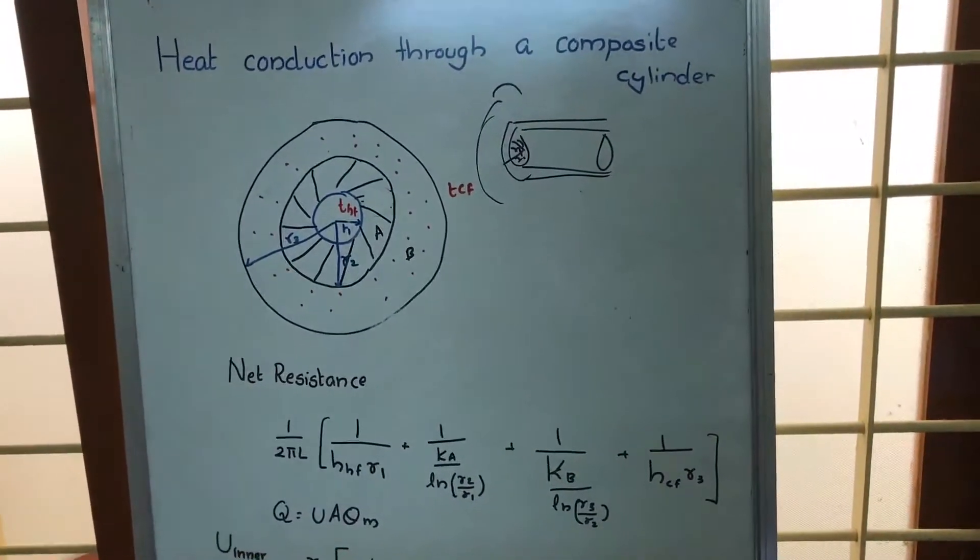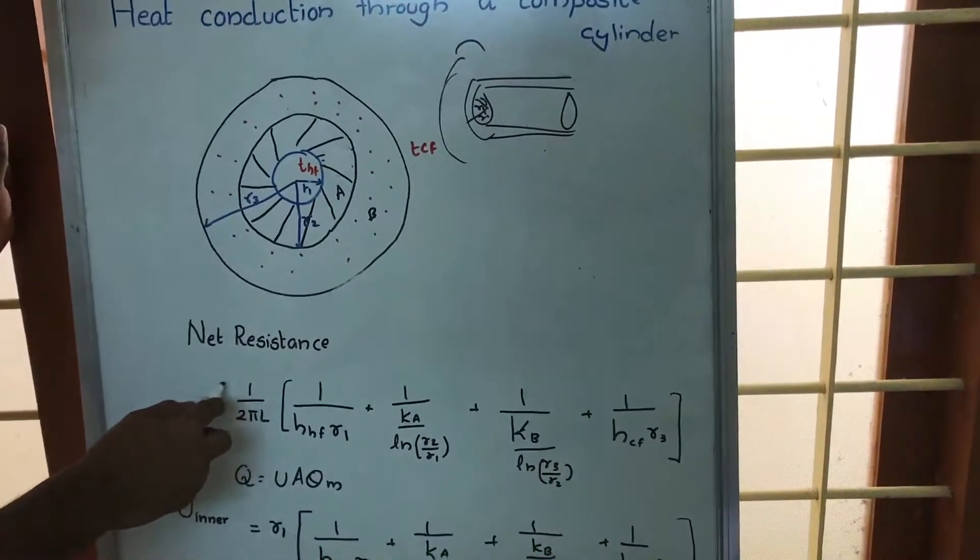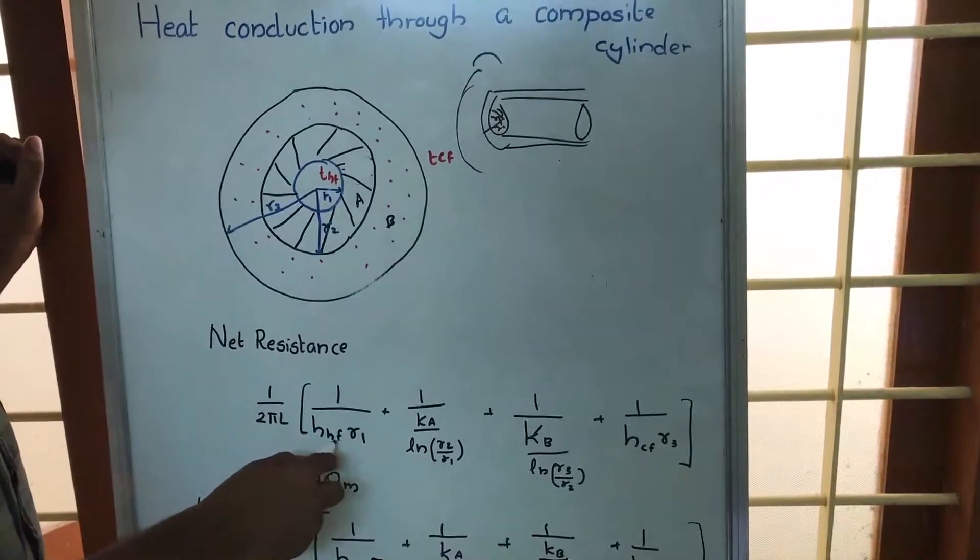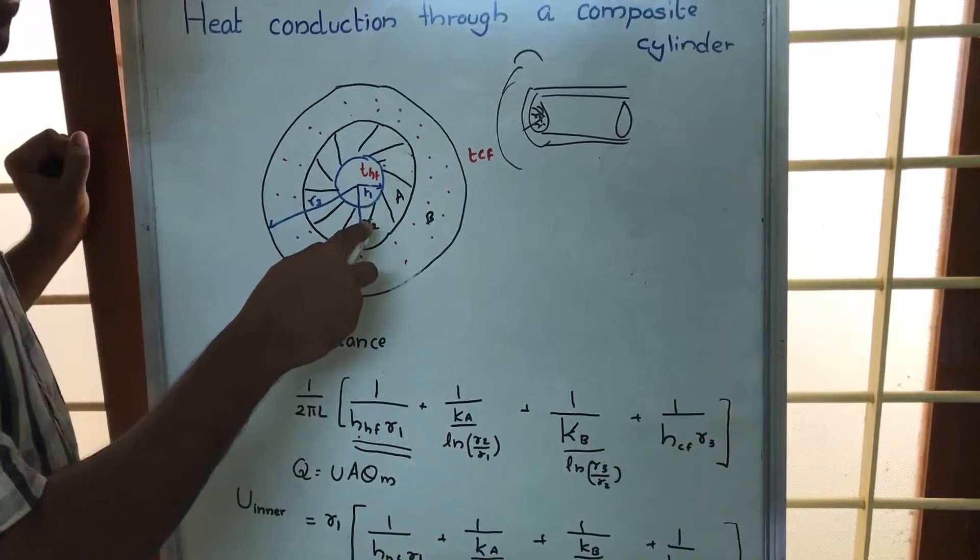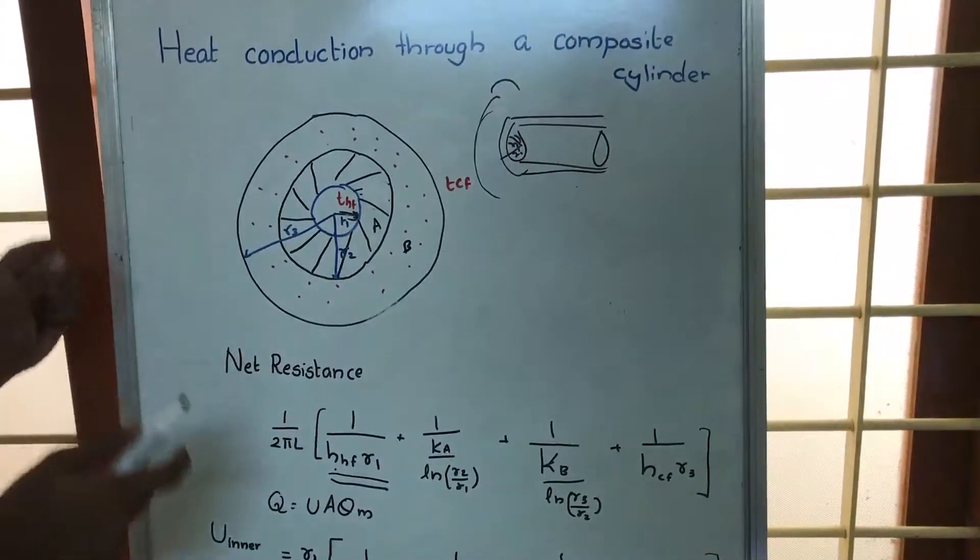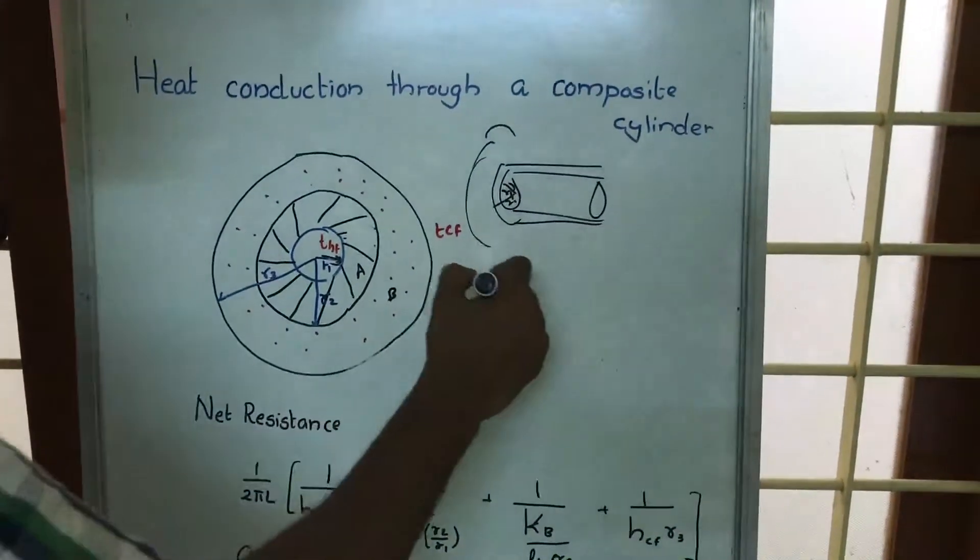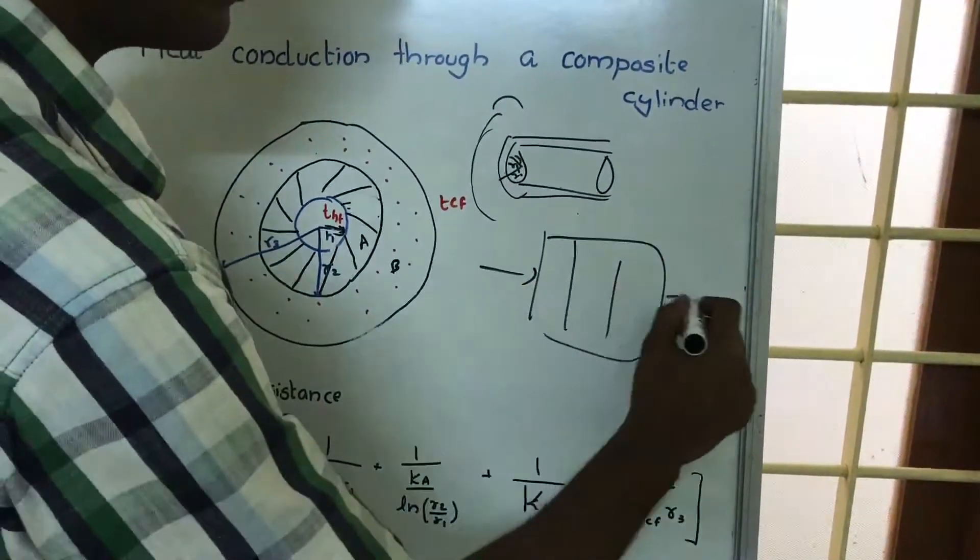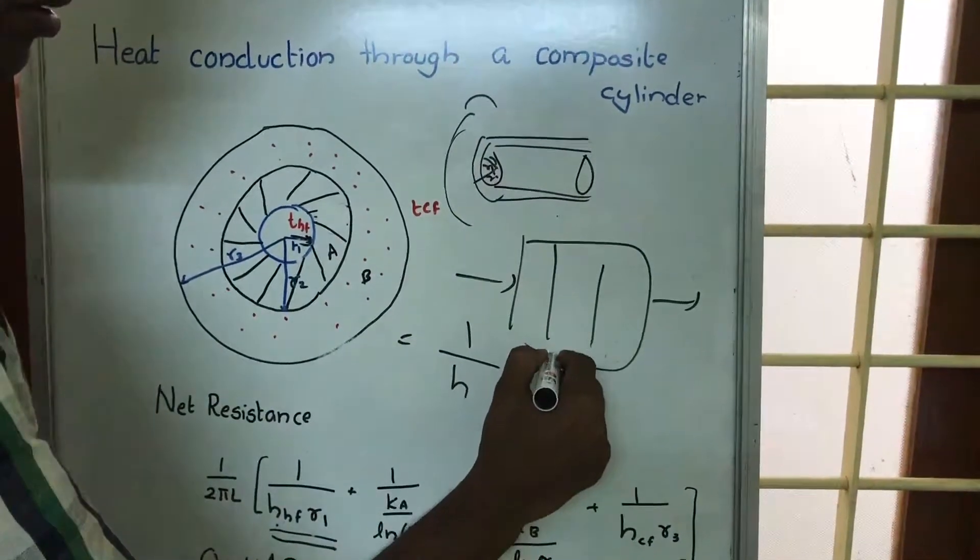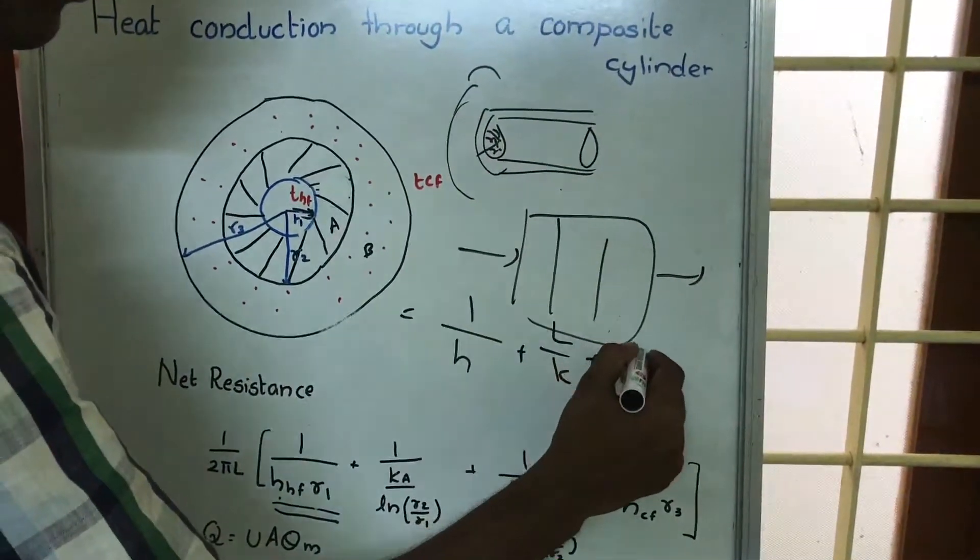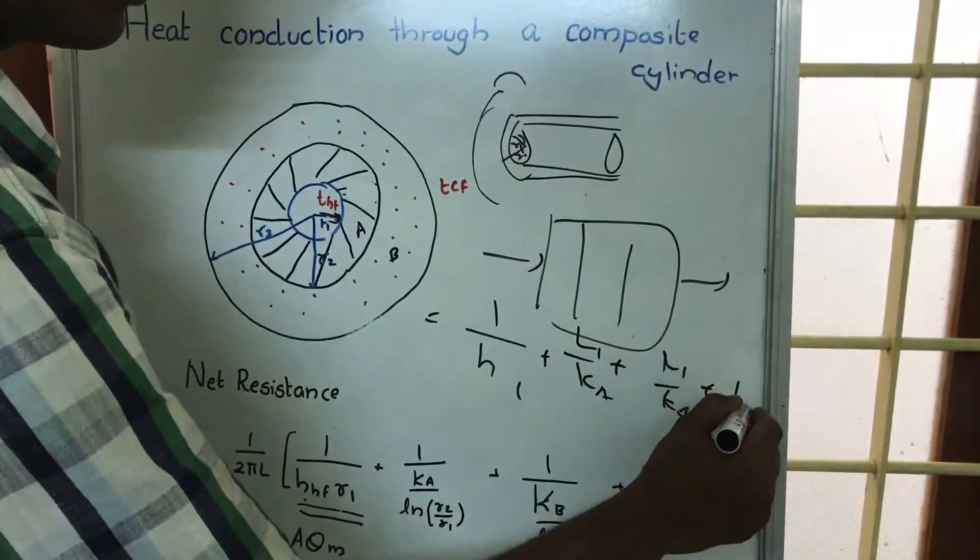Now net resistance for heat flow through this composite cylinder is 1 by 2πL times 1 by HHF R1. HHF is the heat transfer coefficient at the inside surface, R1 is the inside radius, plus 1 by K. In this block diagram, it is something like 1 by H plus L by K plus 1 by H1 plus L1 by K plus L1 by KB plus 1 by H2.